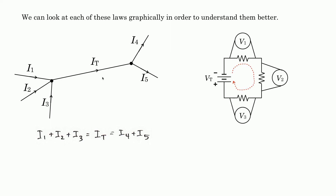Kirchhoff's Voltage Law: if I had a 12-volt battery and I had three resistors in series, and I measured the voltage across each resistor — V1, V2, and V3 — whatever is being supplied will be used by V1, V2, and V3. So his voltage law tells us that the total amount of voltage increases, Vt, is equal to the total number of voltage decreases.